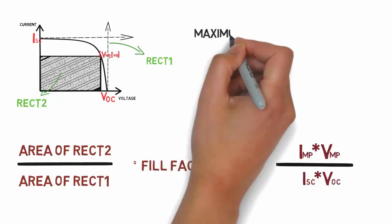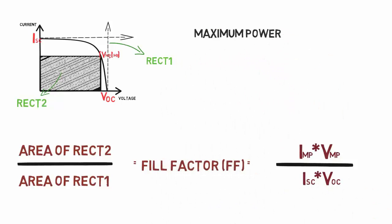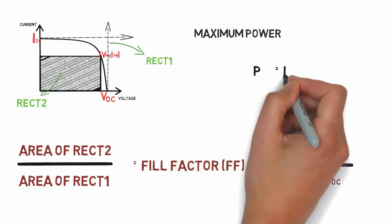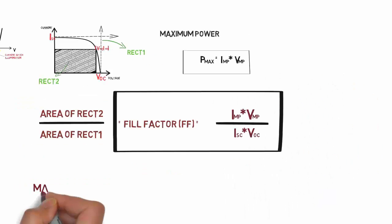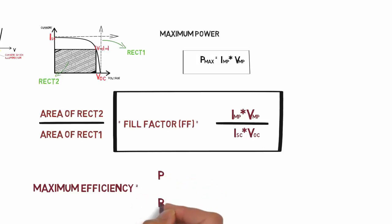The value of maximum power would be equal to Pmax equal to IMP into VMP. So if we see the value for maximum efficiency, then it will be equal to PMP divided by PIN. And from the above two equations we can deduce that the value of maximum efficiency will be equal to fill factor into VOC into ISC divided by PIN.